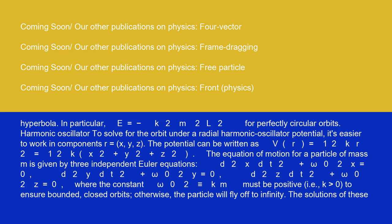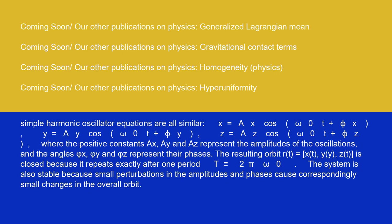The solutions of these simple harmonic oscillator equations are all similar: x equals Aₓ cos(ω₀t plus φₓ), y equals Aᵧ cos(ω₀t plus φᵧ), z equals Aᵤ cos(ω₀t plus φᵤ), where the positive constants Aₓ, Aᵧ, and Aᵤ represent the amplitudes of the oscillations, and the angles φₓ, φᵧ, and φᵤ represent their phases. The resulting orbit r(t) equals (x(t), y(t), z(t)) is closed because it repeats exactly after one period T is identical to 2π/ω₀. The system is also stable because small perturbations in the amplitudes and phases cause correspondingly small changes in the overall orbit.